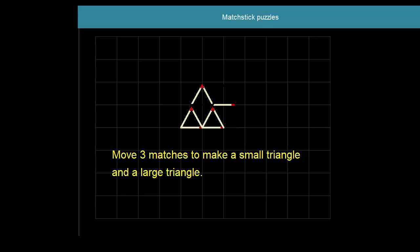There's the first. Second. And third. So we have a large triangle on the left and a smaller one attached to it on the right.